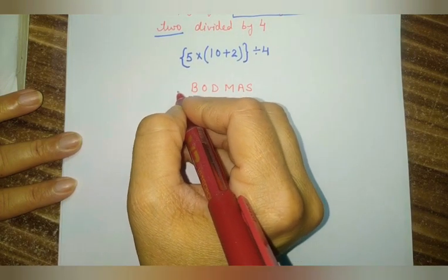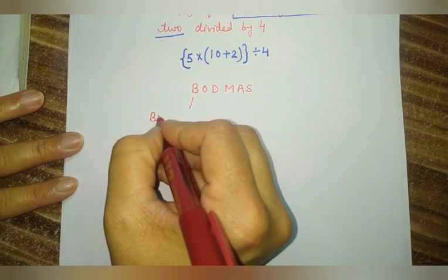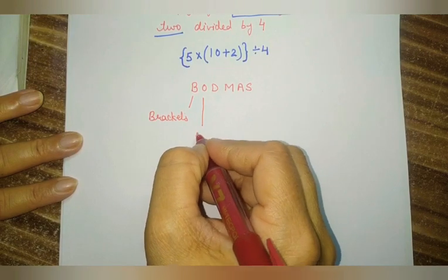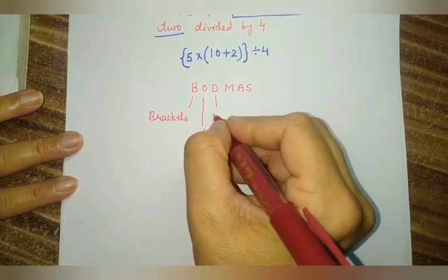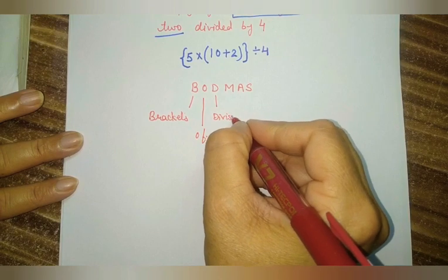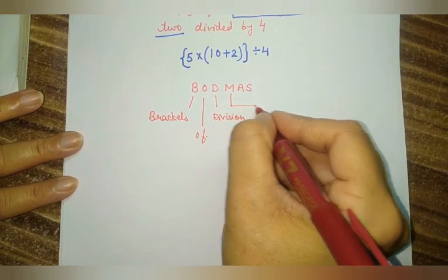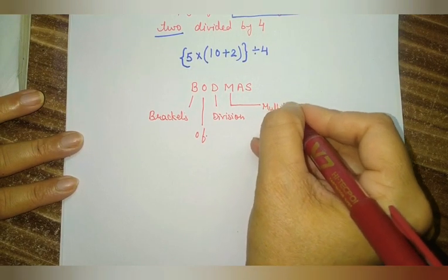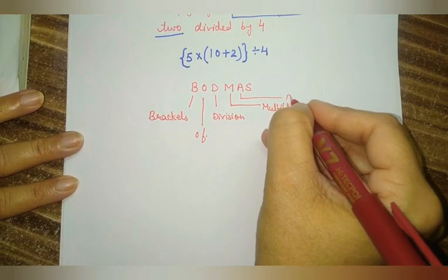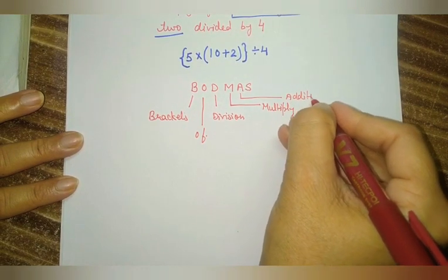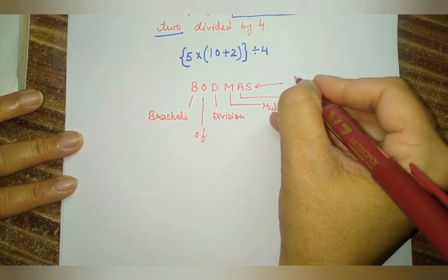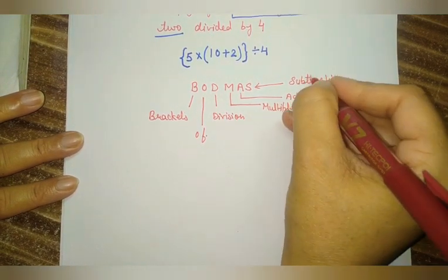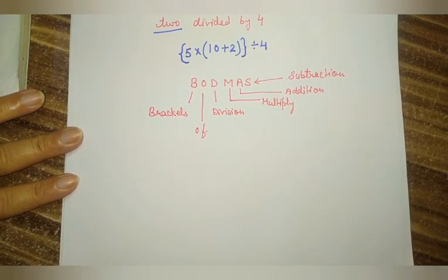So here, the B stands for Brackets. O stands for Of. D stands for Division. M stands for Multiplication — that means multiply. A stands for Addition. And last, S stands for Subtraction. So this is the rule we follow to solve numerical expressions.